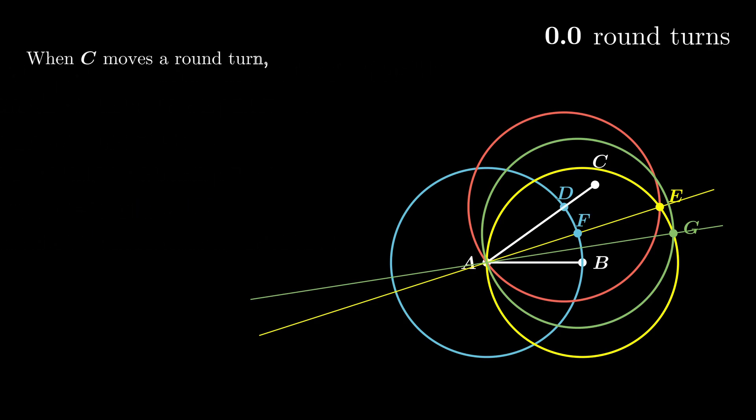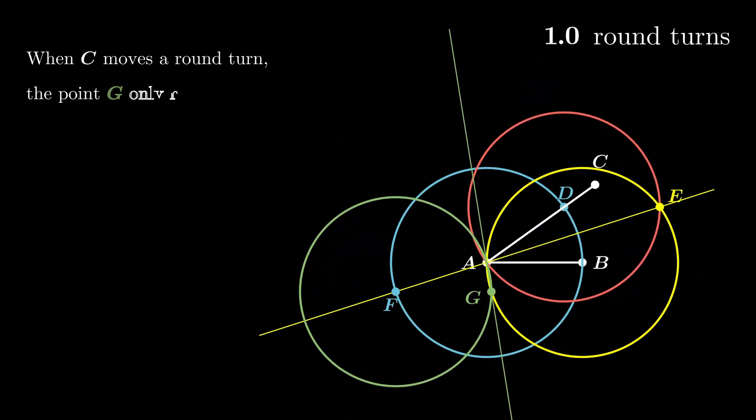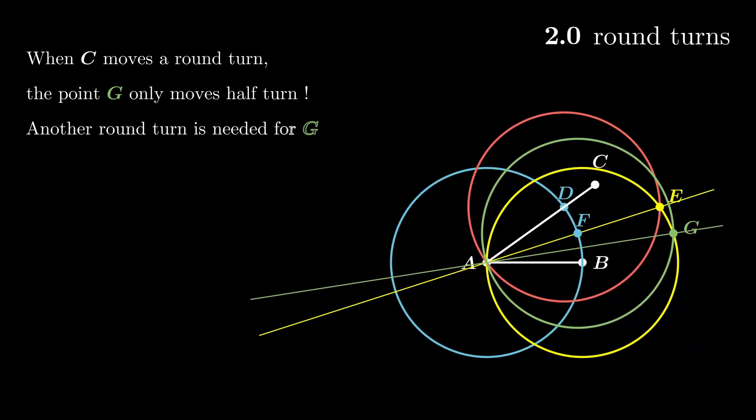Now we are going to move C after a round turn. We see that the point G only moves half turn. So in this case, we need another round turn for the point G to go back to its starting position. Therefore, quadrisection is two periodic.